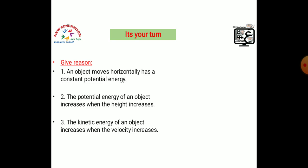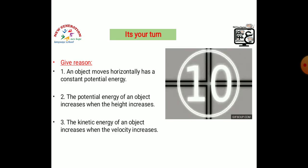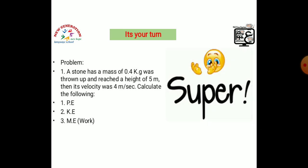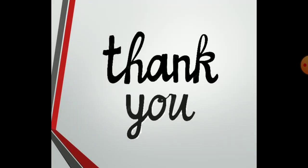Now it's your turn. Give reason: an object moving horizontally has constant potential energy. Number two: the potential energy of an object increases when the height increases. Number three: the kinetic energy of an object increases when the velocity or speed increases. You have 10 seconds. Another question: a stone has a mass of 0.4 kilograms, was thrown up and reached a height of 5 meters, then its velocity was 4 meters per second. Calculate the potential energy, kinetic energy, and mechanical energy or work done on it. This is your homework. Thank you so much. See you later. Goodbye.